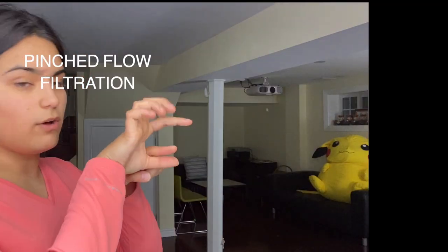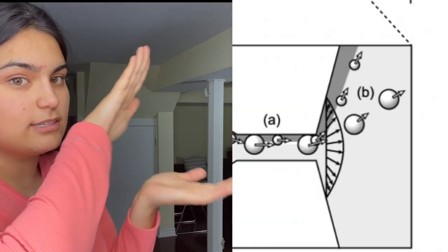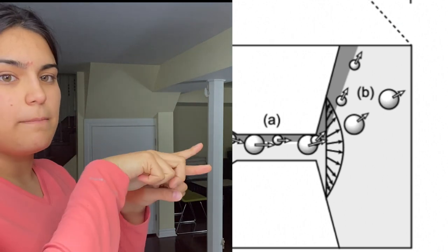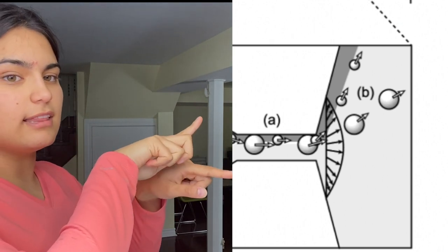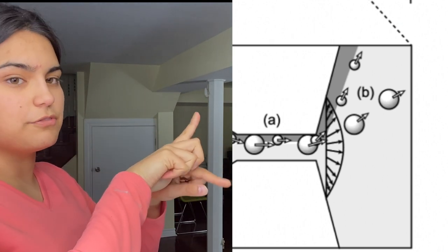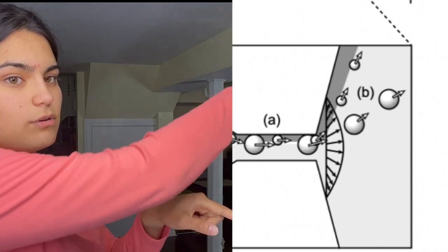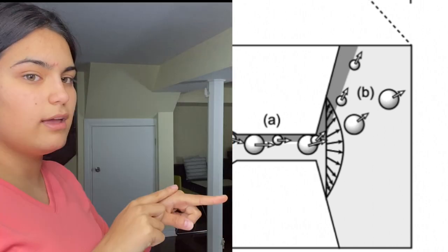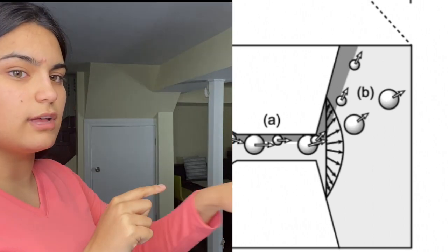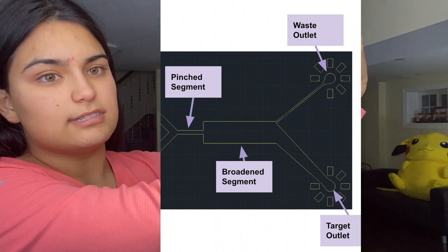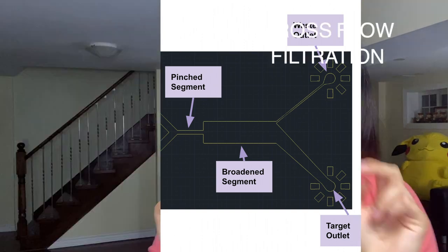Let's start with pinched flow separation. How it works: you have all the cells going through a tube, and then there's an opening. As soon as the cells go through it, bigger cells and little cells will diffract different amounts. A small cell might bend across the corner and go up, whereas a larger cell would go straight. If you make a catcher and calculate the angle, you know all the small cells will end up in one place.